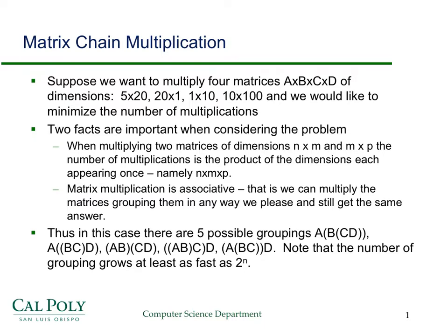Suppose we want to multiply four matrices together, and they have dimensions 5 by 20, 20 by 1, etc. And we want to minimize the number of multiplications.